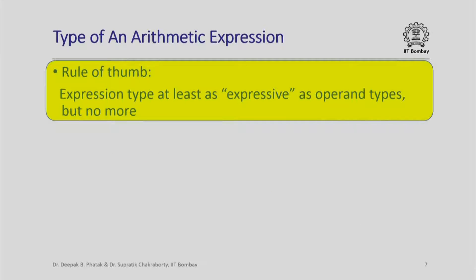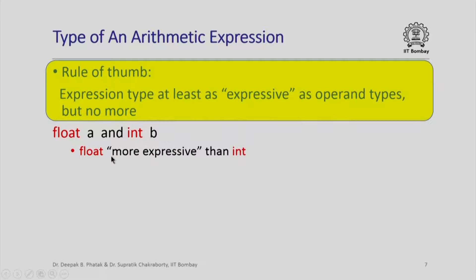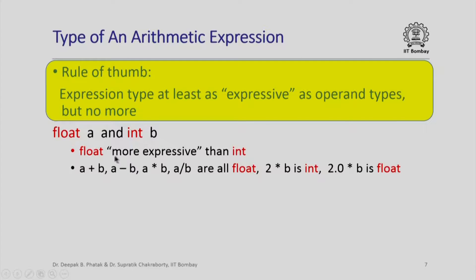A general rule of thumb for determining the type of an arithmetic expression is that the type of the expression must be at least as expressive as the types of the various operands, and no more. For example, if variable a is float and variable b is int, float is considered more expressive than int because you can express all integer values as floating point numbers but not necessarily the other way around. So for expressions like a+b, a-b, a*b, a/b, the type of the expression is going to be float.